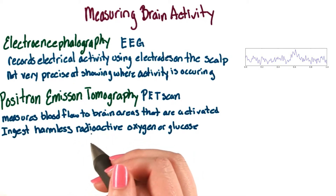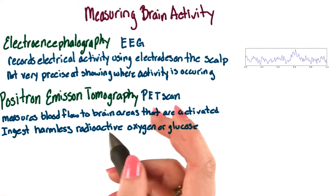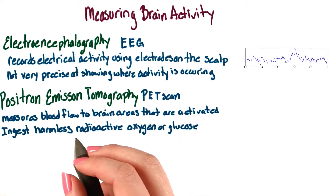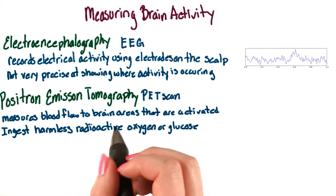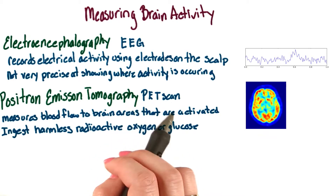Computers then color code the most active areas in red, somewhat active areas in yellow, and the least active areas in blue and green, like you see here.